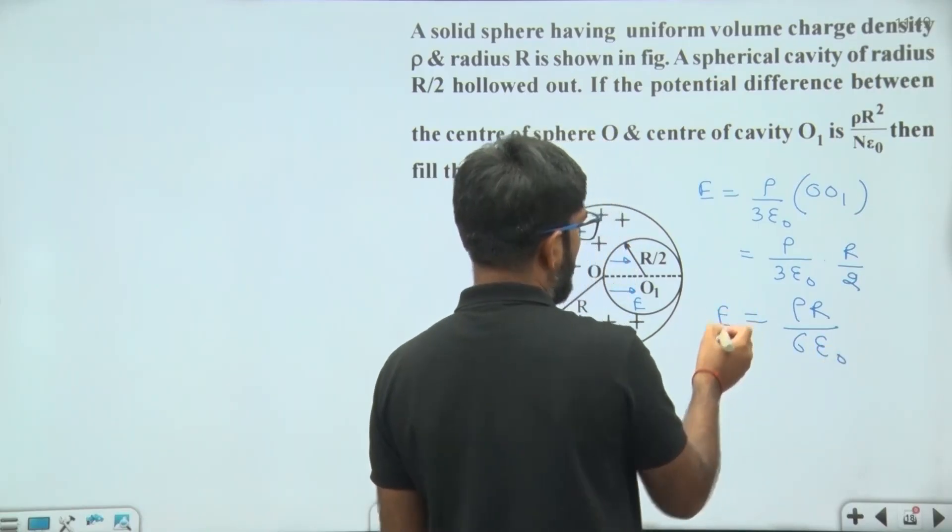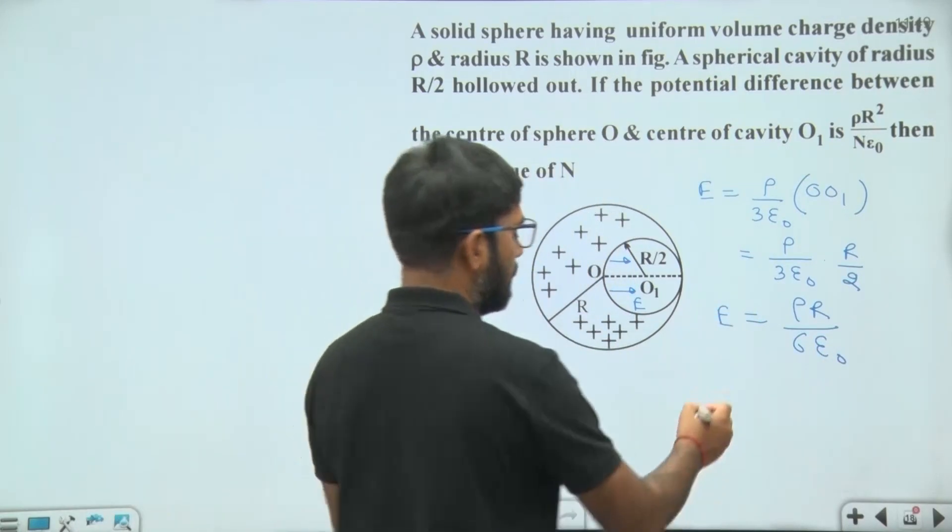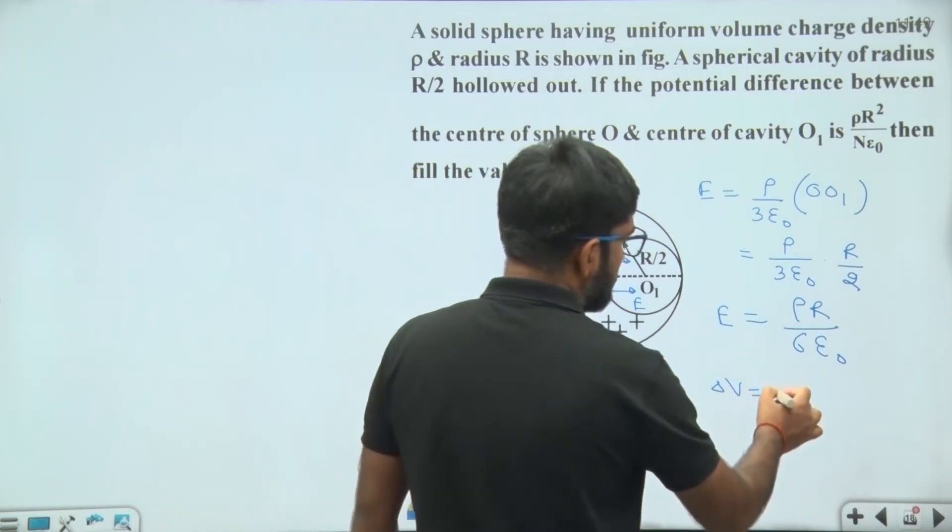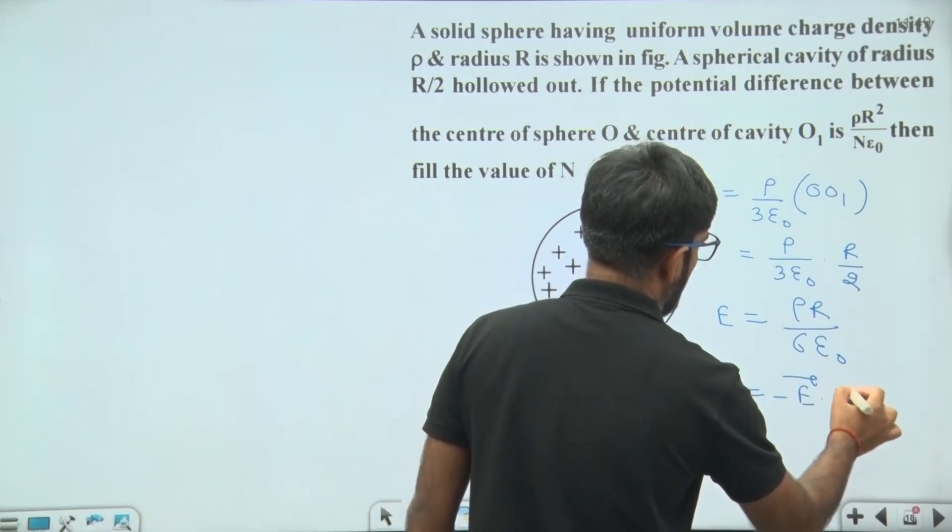This is the uniform electric field and if electric field is uniform then delta V is given by minus E dot delta R.